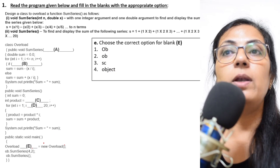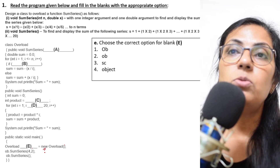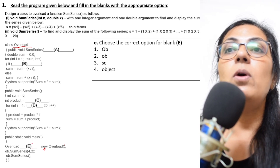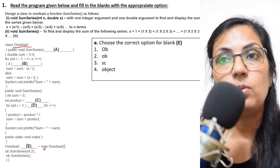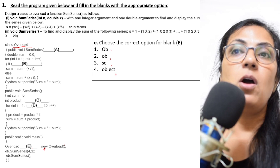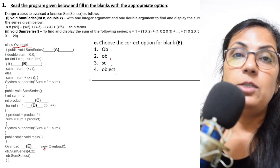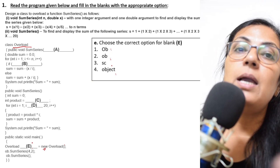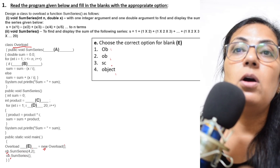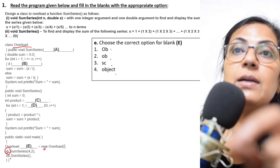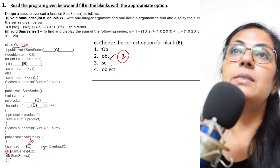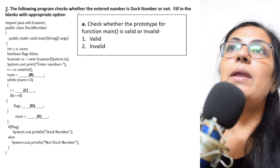For blank E, the statement is: blank = new overload. Remember that new is the operator used to create an object of a class, and overload is the class name. The object name is user-defined. Looking at the next statements where the functions are called as ob.sumSeries(...), the object name used is ob. So option 2, ob, is the correct answer.